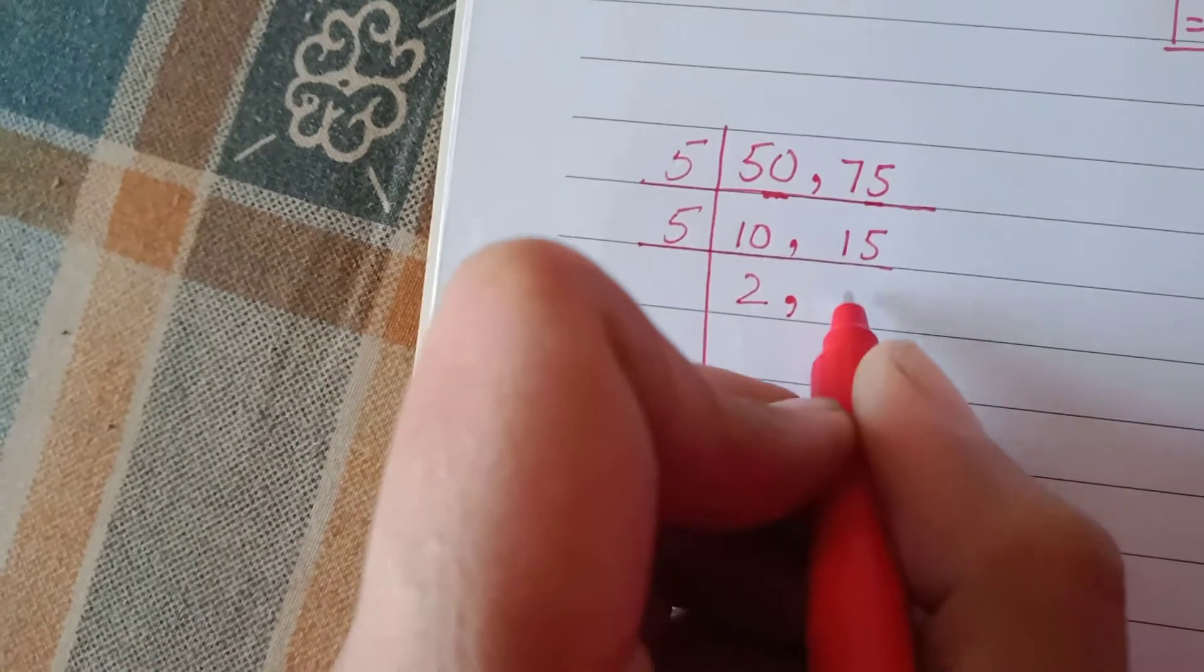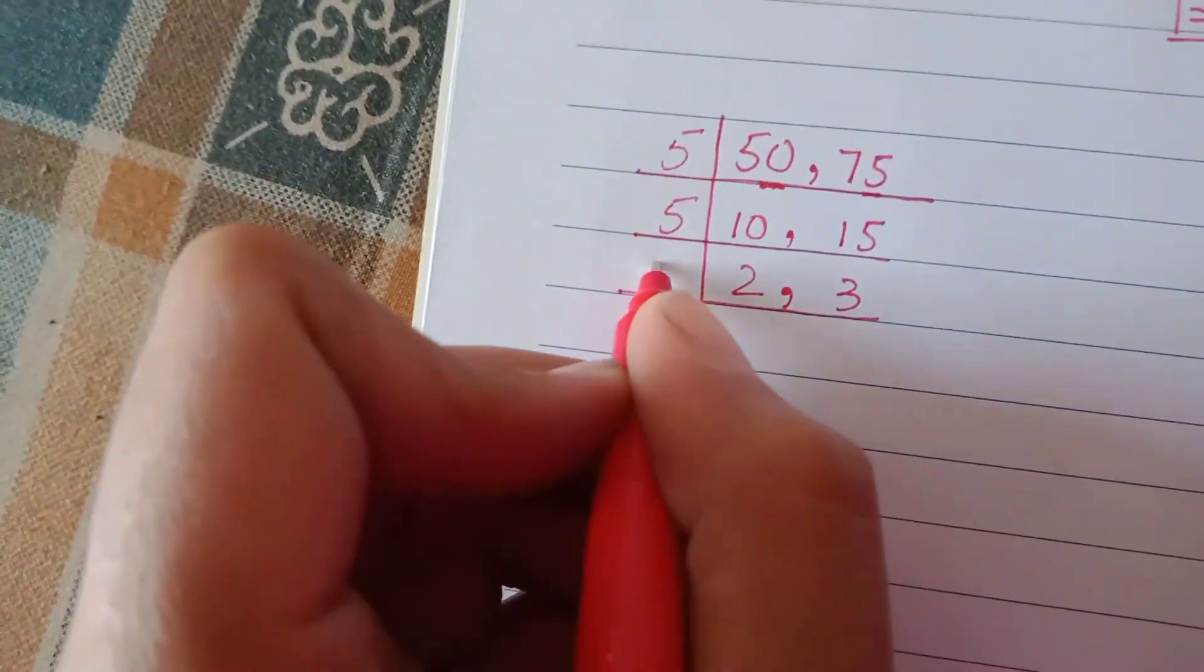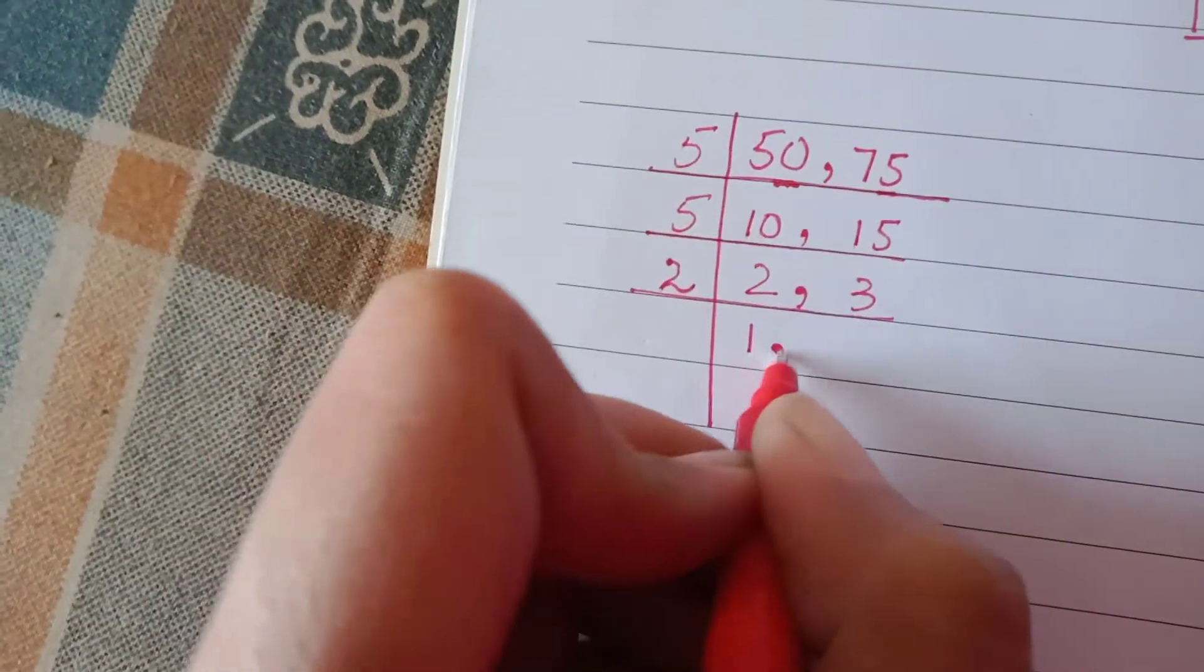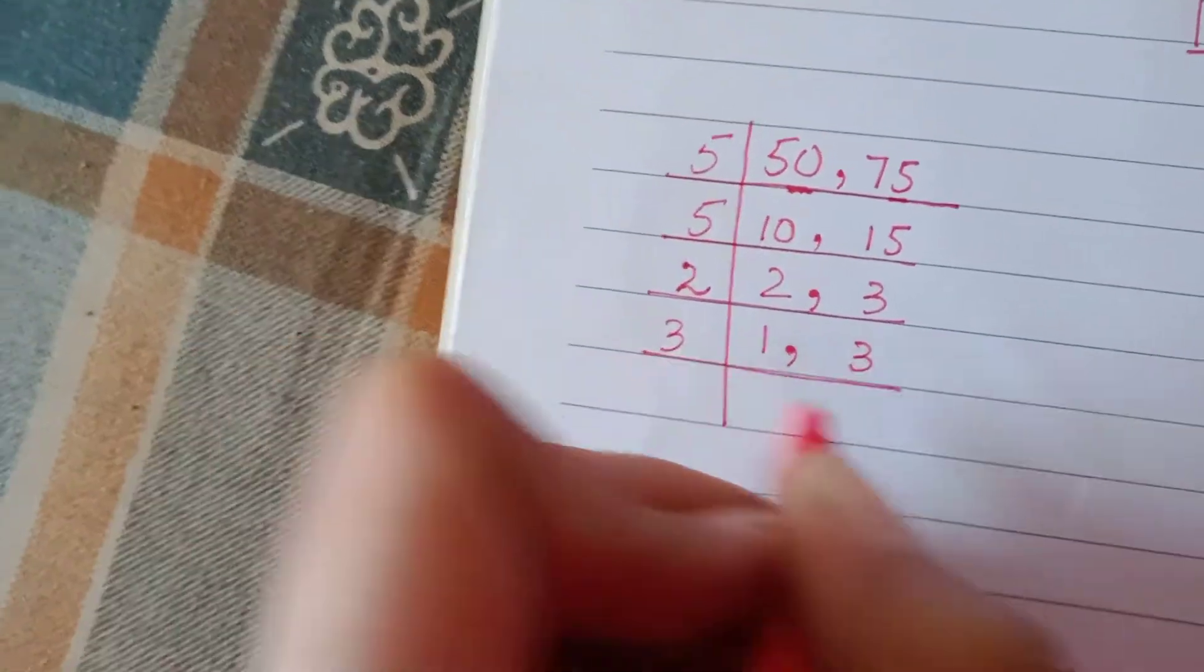Now, 5 into 10 is 2, and 5 into 15 is 3. 2 into 2 is 1. 3 into 3 is 1.